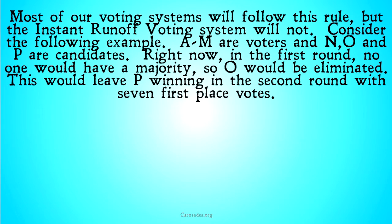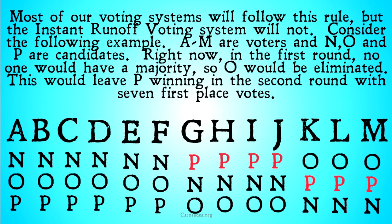Most of our voting systems are actually going to follow this rule, but the instant runoff system will not. Consider the following example. A through M are voters, N, O, and P are candidates. Right now, in the first round, no one would have a majority.